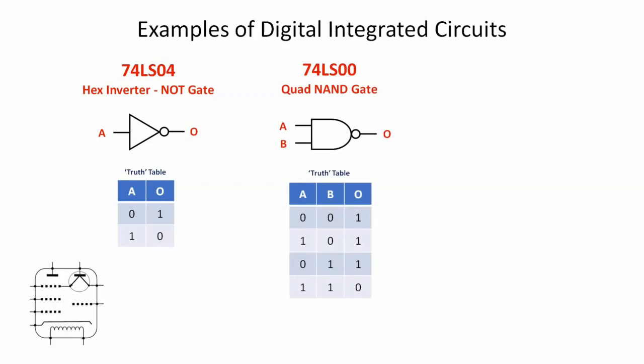So the truth table for a NAND gate: when both inputs are low, output is high. When one of the inputs is high, the output is low. And if both inputs are high, then the output is low.